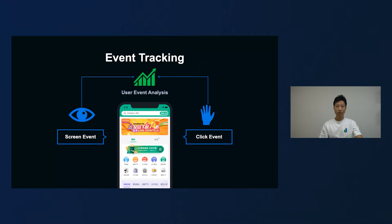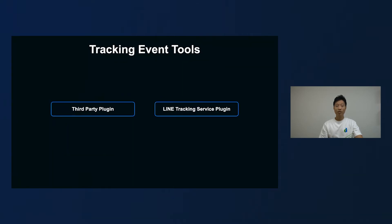Event tracking is a pretty mature concept and widely used in mobile app development. However, when using Flutter, things become a little different because everything is new to us. After surveying, our team decided to use two tools for event tracking. One is a third-party plugin — we use Firebase — and the other is LINE Tracking Service. Firebase is a famous tool, and it provides a Flutter plugin so we can use it directly. LINE Tracking Service is a tracking tool developed by LINE for internal usage. It provides both iOS and Android libraries; however, it doesn't support Flutter yet, so our team needed to build a Flutter plugin by ourselves.